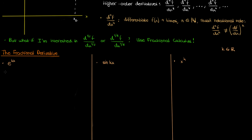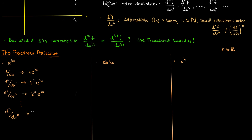Let's start with the exponential function by taking natural number derivatives. The first derivative is k e to the kx via the chain rule. The second derivative is k squared e to the kx. The third is k cubed e to the kx, and extending this logic to the nth derivative, the nth derivative of e to the kx is k to the n times e to the kx, where n is a natural number equal to the order of differentiation.